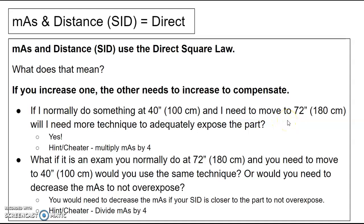So if you normally do something at 40 inches and for some reason you need to do it at 72 inches, will you need more technique to adequately expose that part? Yes. So if I normally do a lumbar spine at 40 inches and for some reason I have to do it at 72, will I just keep my technique the same? No, because I'm farther away, so I need more. So more SID needs more mAs and I simply multiply by four.